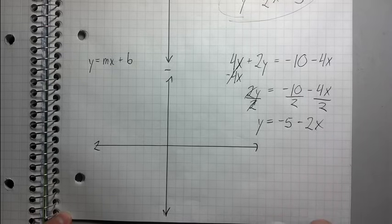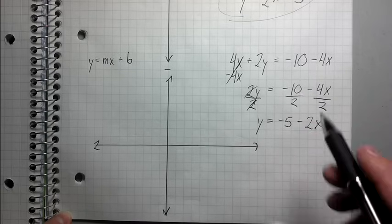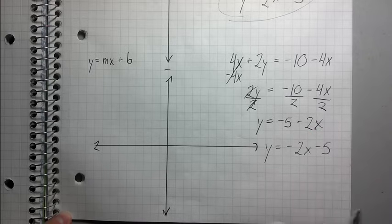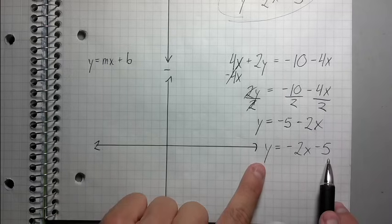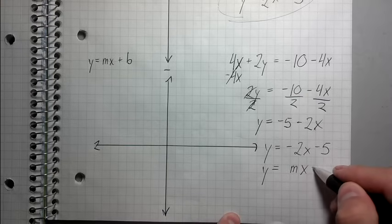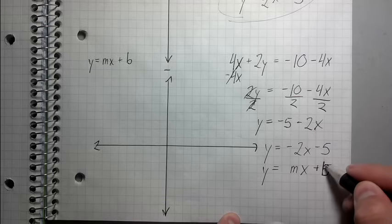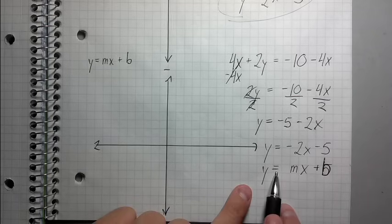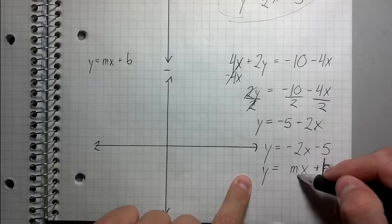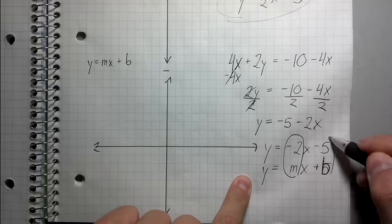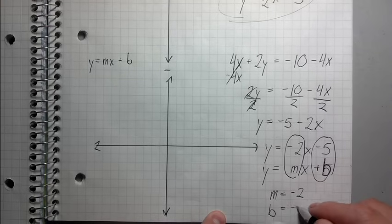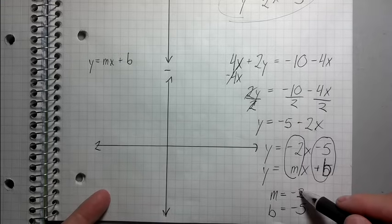For cosmetic reasons, I'm going to switch these two terms around and write y equals negative 2x minus 5. I didn't do anything — I just changed the order so it's more obvious that it matches slope-intercept form. y equals mx plus b corresponds to y equals negative 2x minus 5, which means m equals negative 2 and b equals negative 5. So the slope is negative 2 and the y-intercept is negative 5.